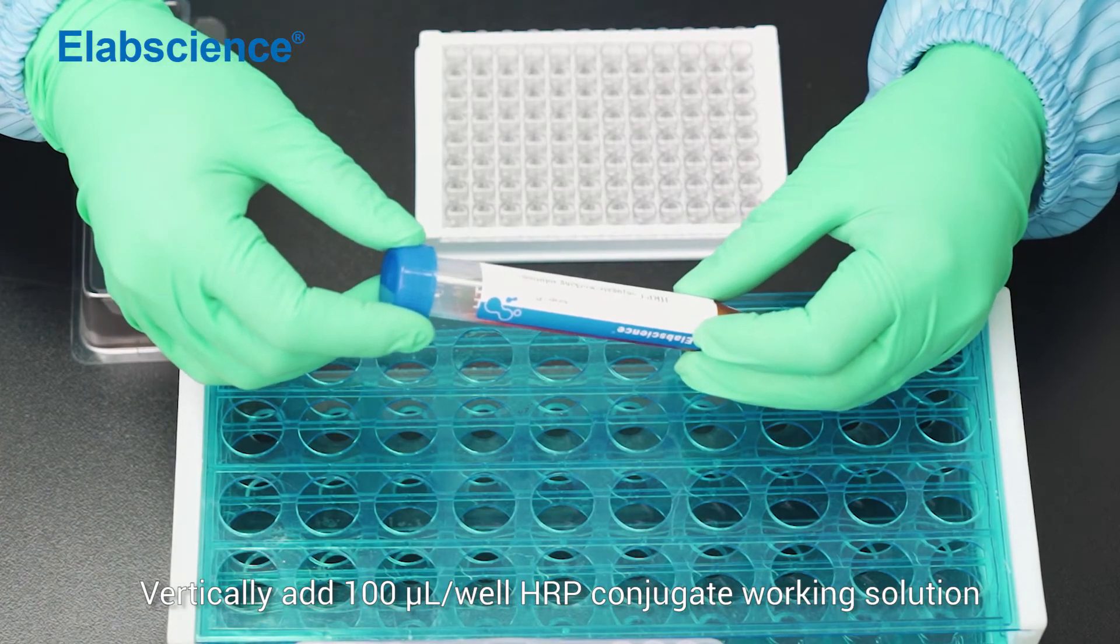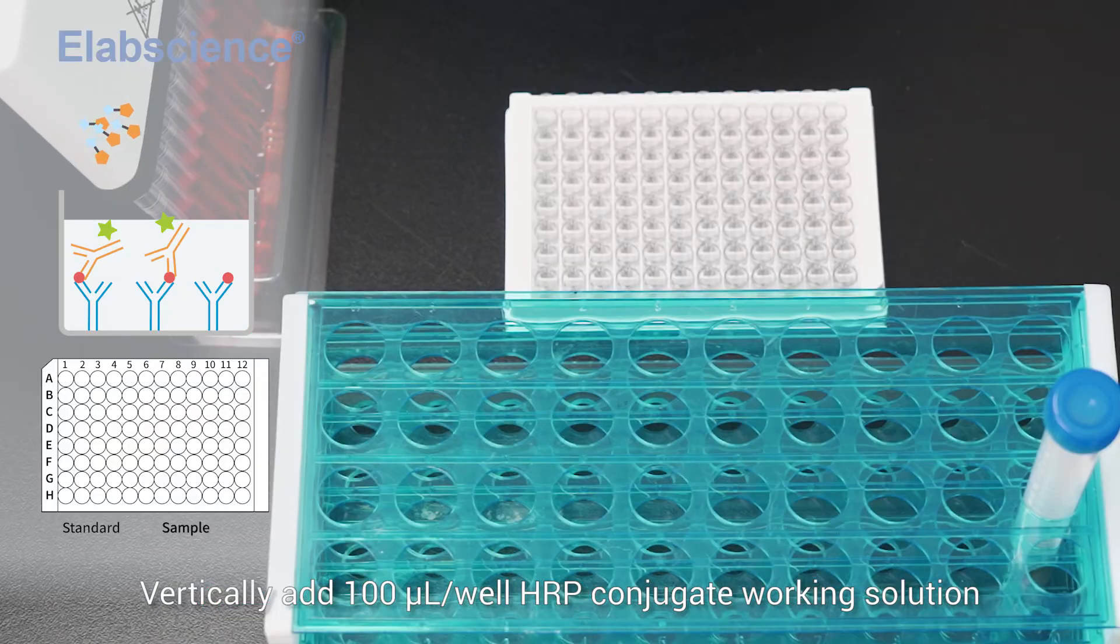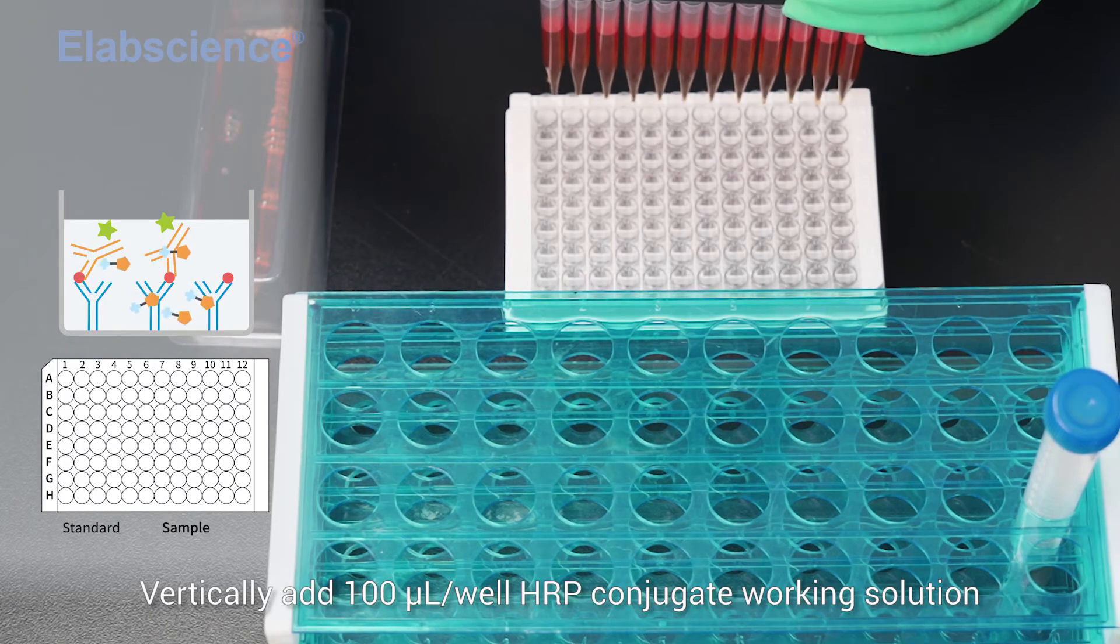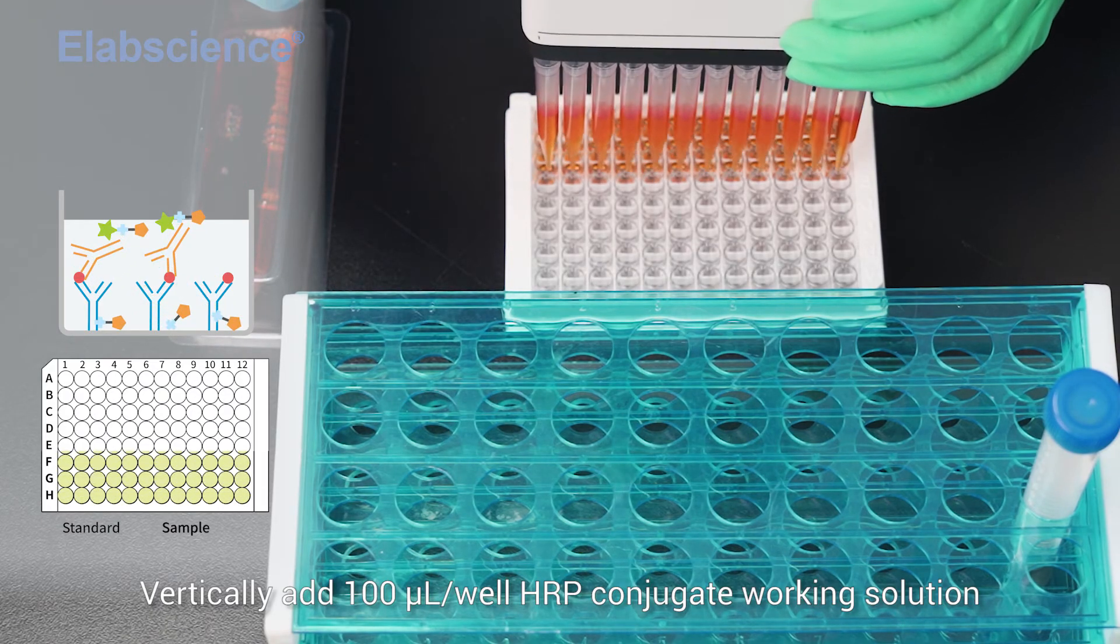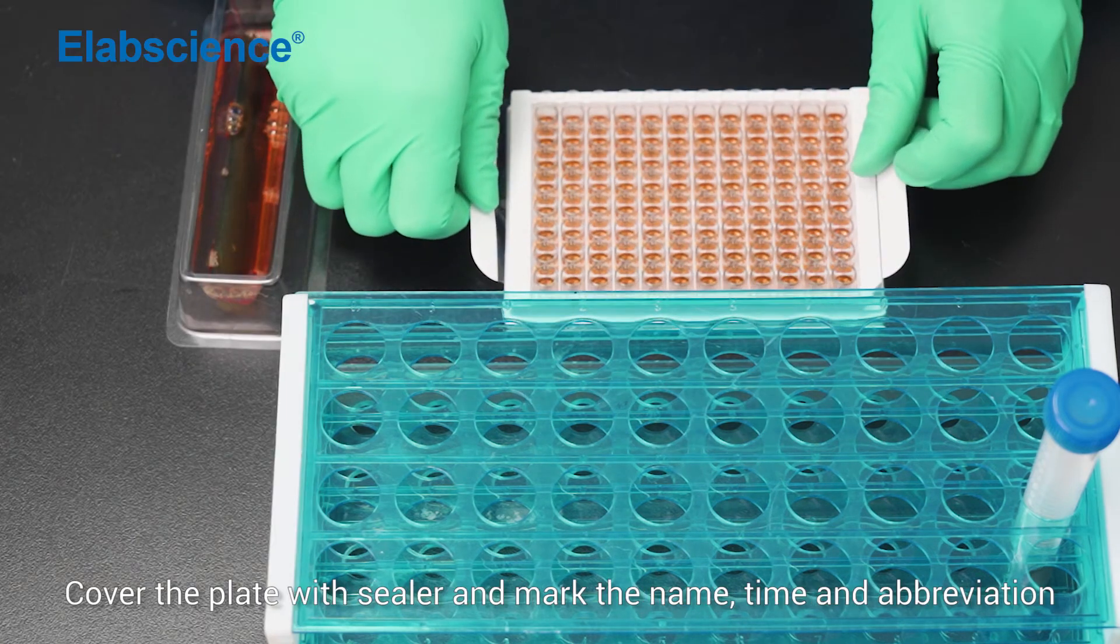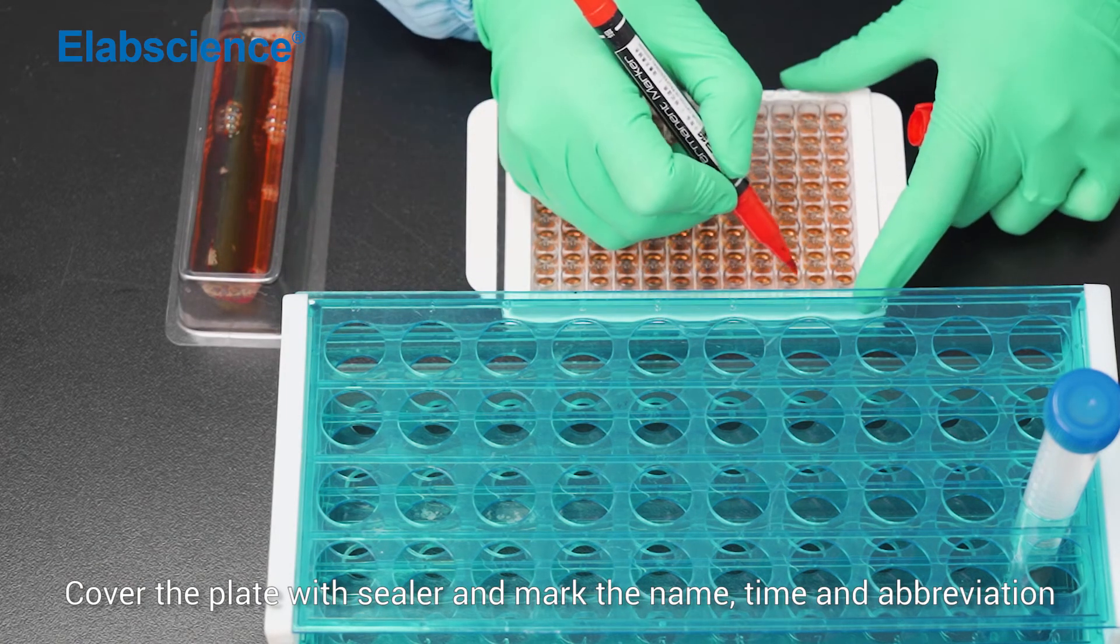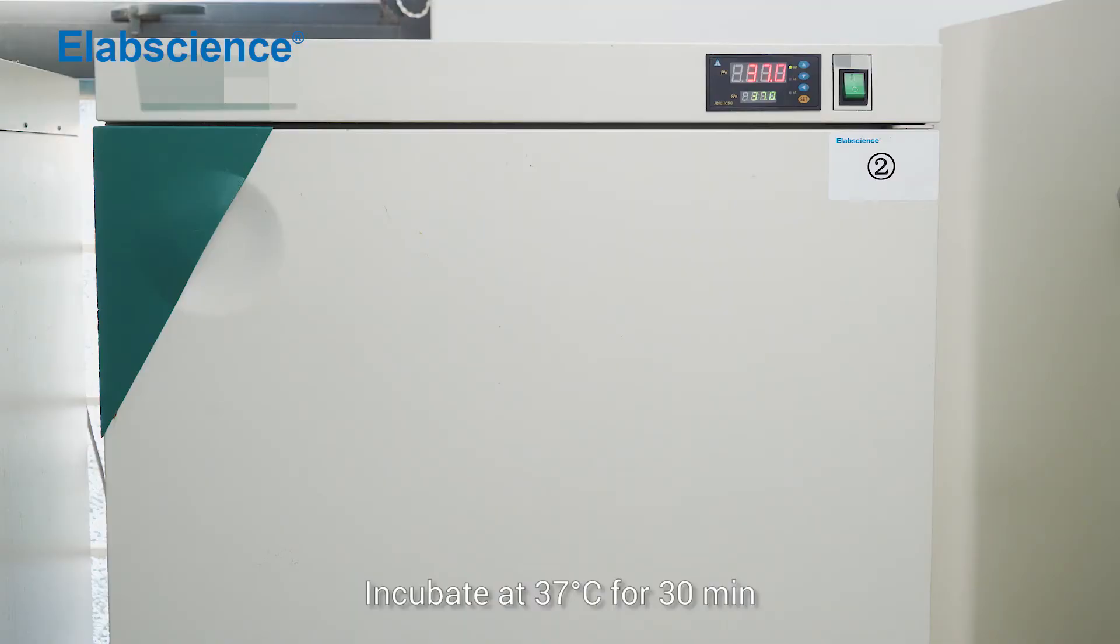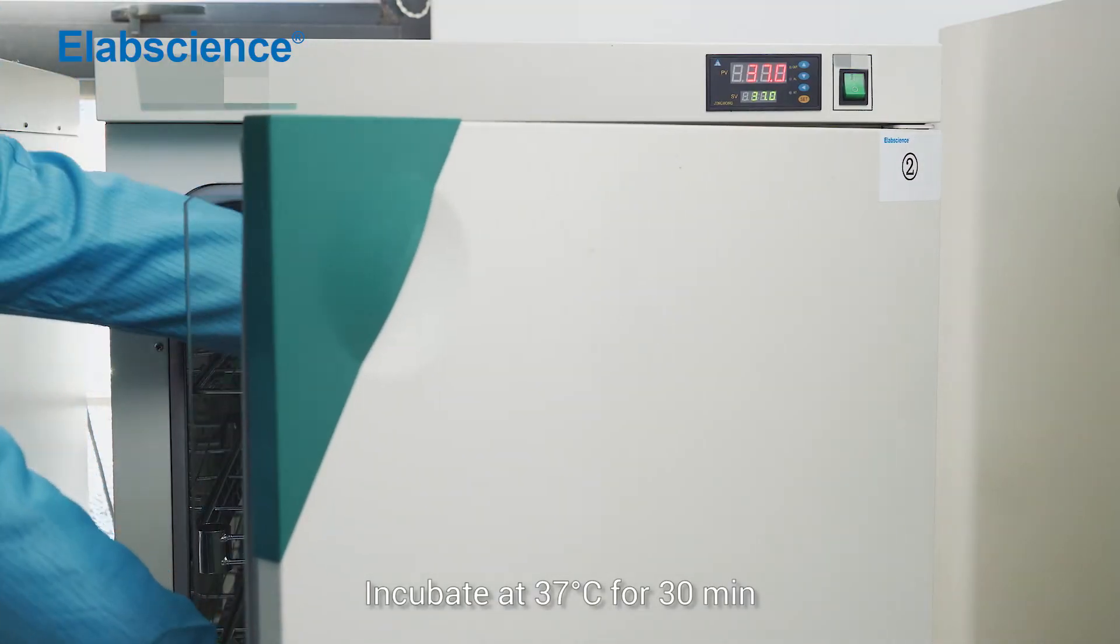Vertically add 100 µL per well HRP conjugate working solution. Cover the plate with sealer and mark the name, time and abbreviation. Incubate at 37 degrees for 13 minutes.